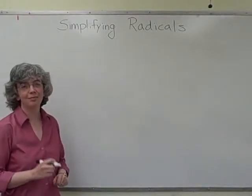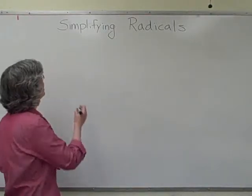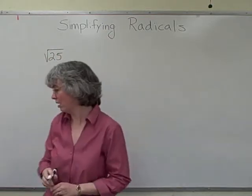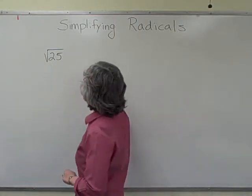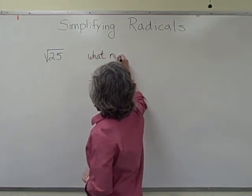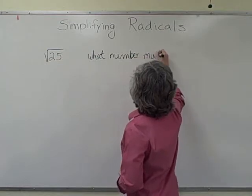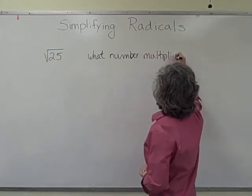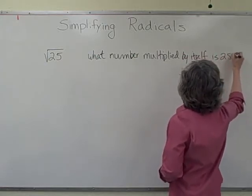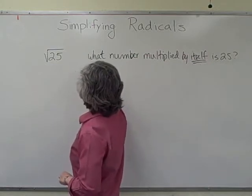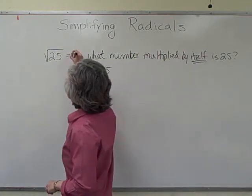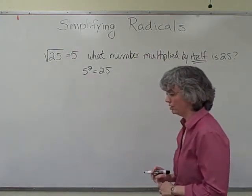Today we want to simplify radicals, and let's start with one of our most favorite, which is the square root of 25. When we write this radical symbol, we want to know what number multiplied by itself gives us 25. We hopefully remember that 5 squared is 25, so our square root of 25 is 5.